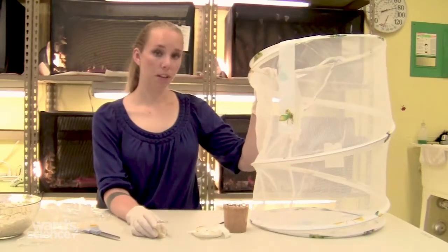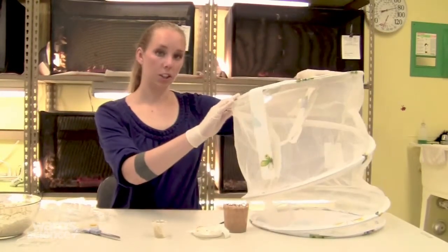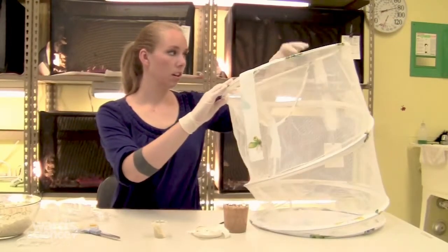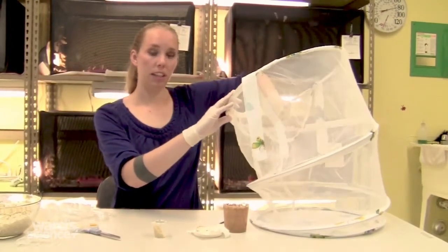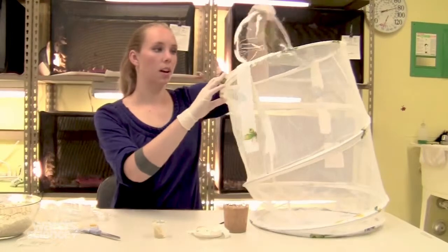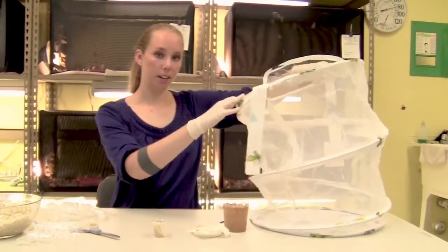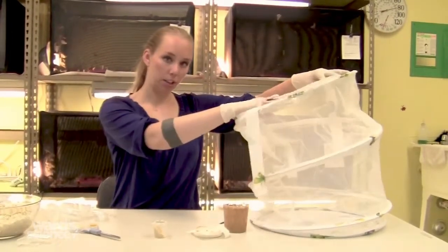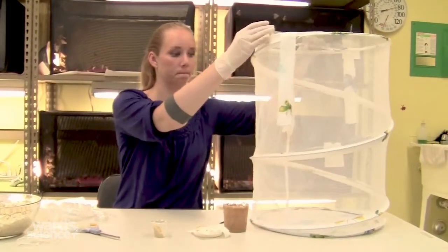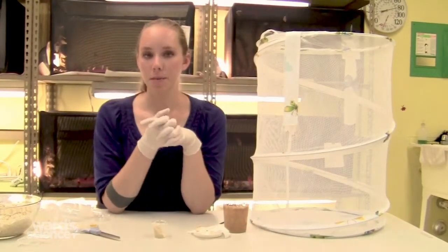When you've given the chrysalids 24 hours, you can then put them inside your cage. You'll want to remove the lid from the top of the cup and tape it to the inside of your cage. The top of the cage is a good place to tape it since it's plastic. After you've done that, it'll be another week before the chrysalids emerge as butterflies.